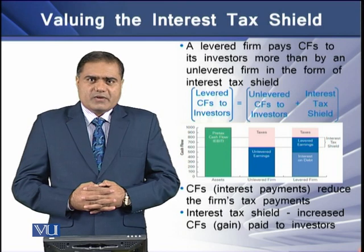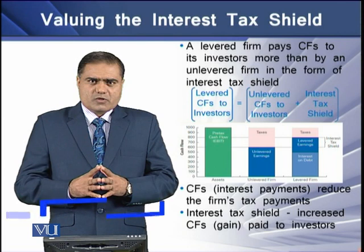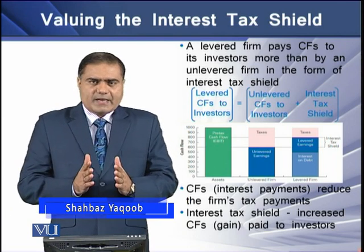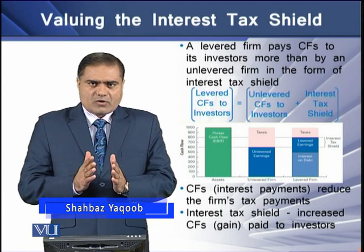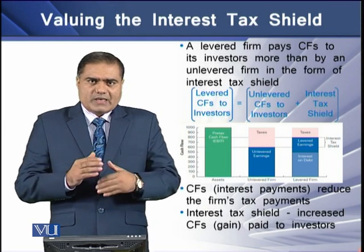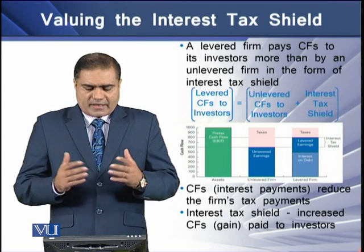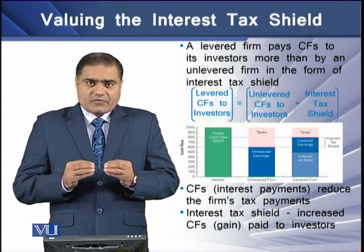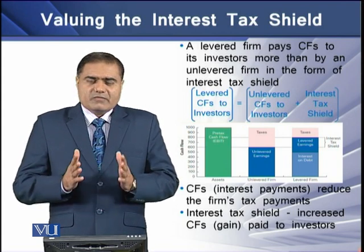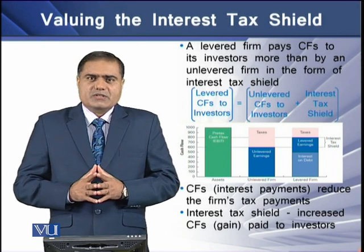A levered firm pays cash flows to its investors more than the cash flows provided to investors by an unlevered firm. These additional cash flows are in the form of interest tax shields that a levered firm can give to its investors but an unlevered firm cannot. This means that the levered firm's cash flows to investors are the sum of unlevered cash flows plus the interest tax shields.